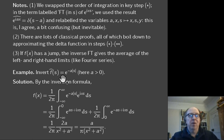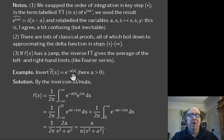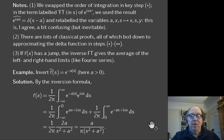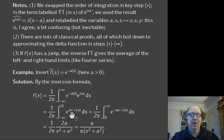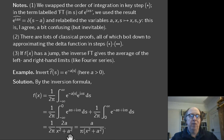Example: invert e^{-a|s|}. We need (1/2π) ∫_{-∞}^{∞} e^{-a|s|} e^{ixs} ds. Split the range: for s<0 use e^{as}, for s>0 use e^{-as}. Integrating each piece from 0 to ∞ and adding gives (1/2π) × 2a/(x²+a²) = a/(π(x²+a²)), the Cauchy/Lorentzian density — consistent with the known Fourier transform pair.